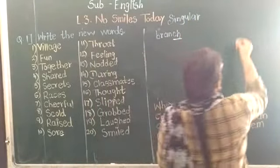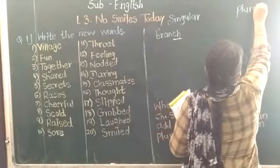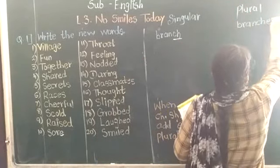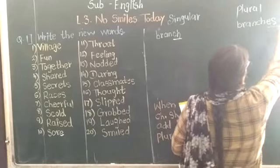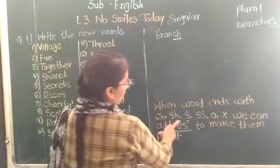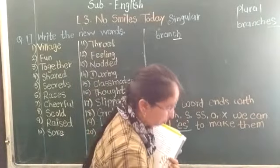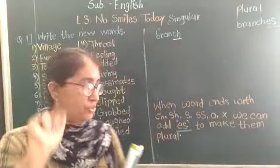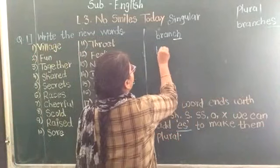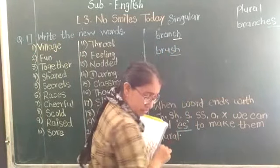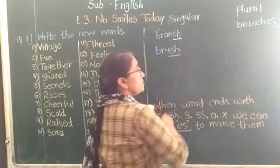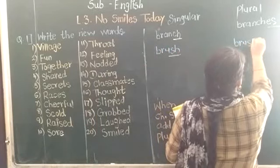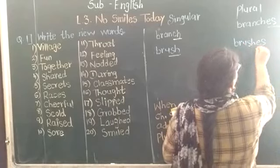Next is SH. For example, brush — B-R-U-S-H — ends with SH. So we add ES to make it plural. It becomes brushes. Understood?